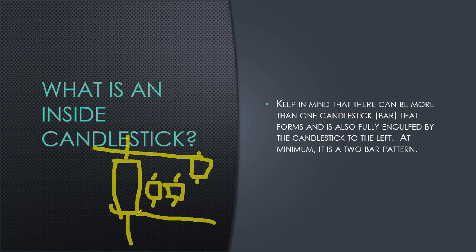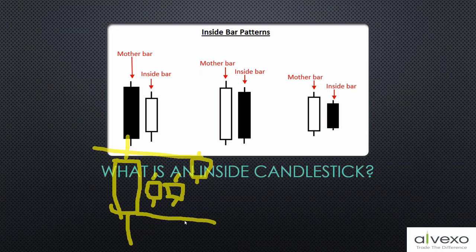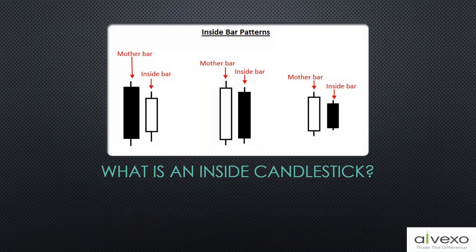At a minimum it requires two candlesticks — two complete sessions — so you always have the mama candle and the baby candle. But you can have mama candle with twins or quadruplets. As you can see, there are many slight variations but they all fit the same definition. You have the mother bar and the inside bar — sometimes you have great big candles, sometimes little ones, and they can be opposite colors, which is quite important.